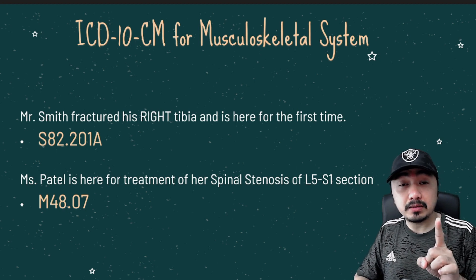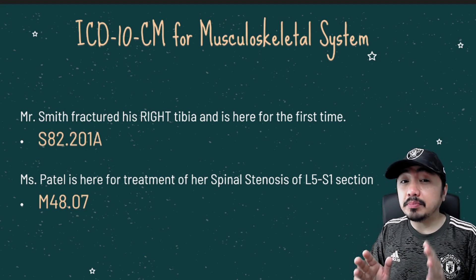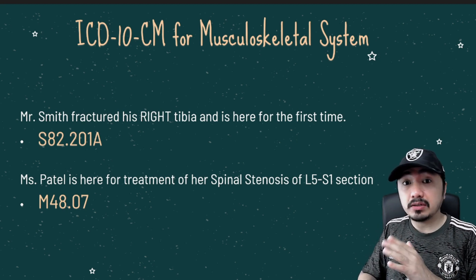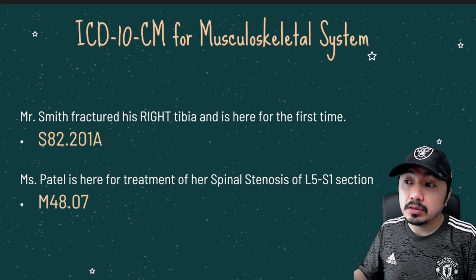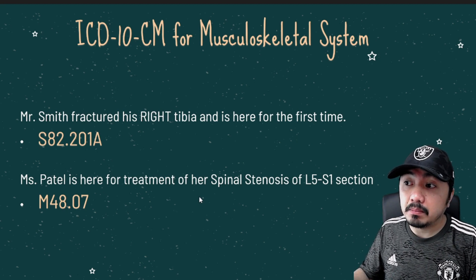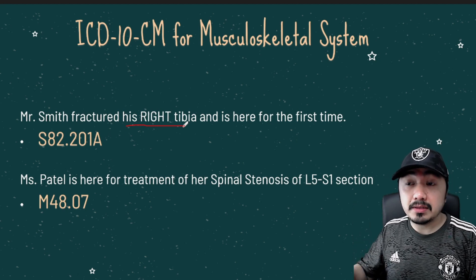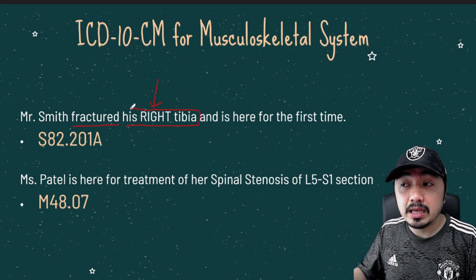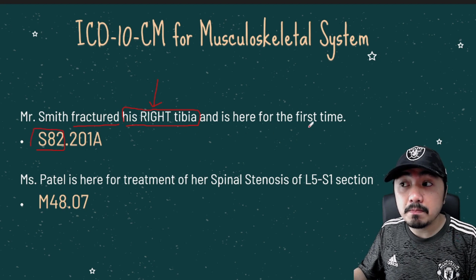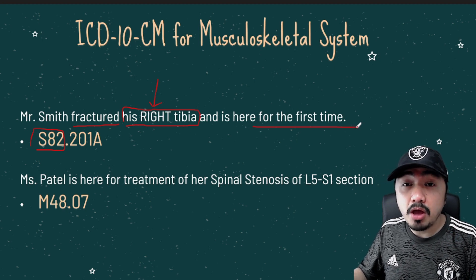Diagnosis coding for musculoskeletal system conditions can be found in M and S codes. Chapter 12, the M codes, covers diseases of the musculoskeletal system, while Chapter 19, the S codes, includes injuries related to the musculoskeletal system. For example: Mr. Smith fractured his right tibia. For the musculoskeletal system, laterality is very important, but first check the site of the condition. Here the condition is a fracture at the right tibia. Note the seventh character application found under category S82. Since this is the patient's initial encounter, the code is S82.201A.